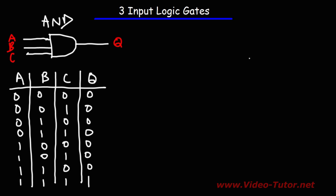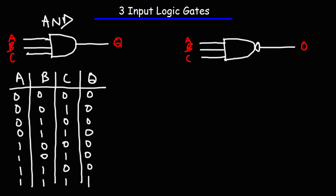Now let's talk about the NAND gate. The symbol looks very similar — the exception is that we have a circle at the output. Everything else will be the same. We're going to use the same three inputs A, B, and C, and the output Q. That's the electrical symbol for a NAND gate.